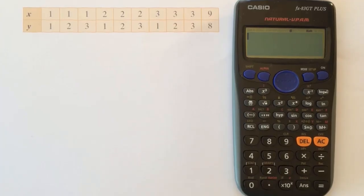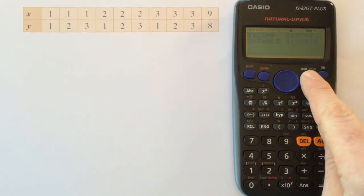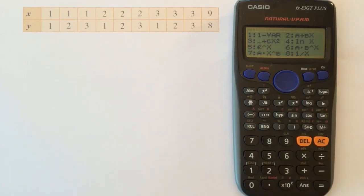The first thing I'm going to do is I'm going to put the calculator in statistics mode. So I'm going to press mode and choose option two statistics.